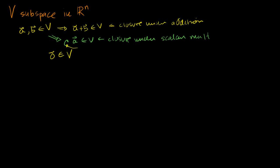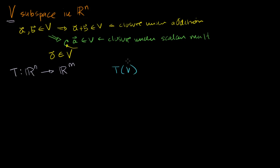Now let's say I also have some transformation T — a mapping from Rn to Rm. What I want to understand in this video is: I have a subspace V, and I want to understand whether the transformation of the subspace — what we call the image of our subspace, the image of V under T — is also a subspace.